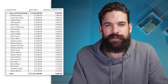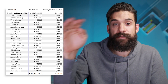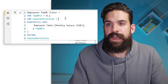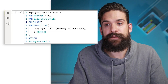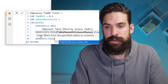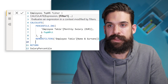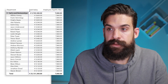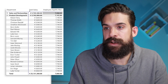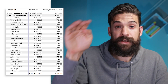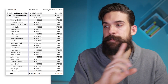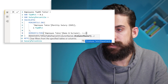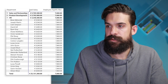Returning the salary percentile returns the same value as the total salary — not helpful. The problem is filter context on department and employee name. Wrap the PERCENTILX.INC inside a CALCULATE function and remove the filter on employee name. Now it returns the same value for each employee within the sales and partnerships department, but a different value for the next department — we're calculating the 90th percentile per department. To get the overall company-wide 90th percentile, also remove the filter on department. Now we get the same value everywhere.